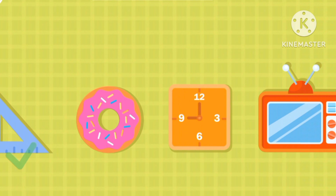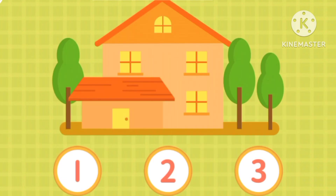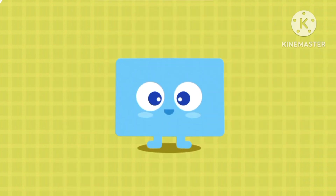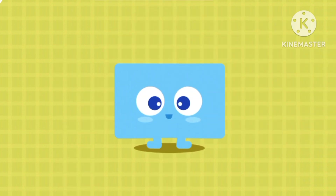Can you find a triangle? The ruler is a triangle. Can you count how many triangles there are? There is one.